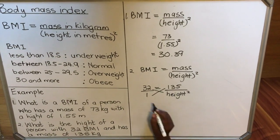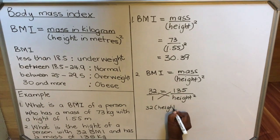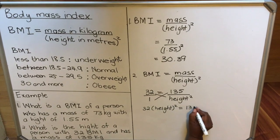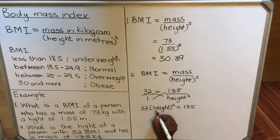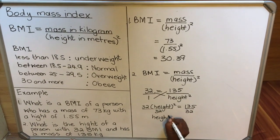So 32 times height squared equals 1 times 135, which will be 135. Because we want height, we're going to divide by 32 on both sides, and then we'll have height squared equals—